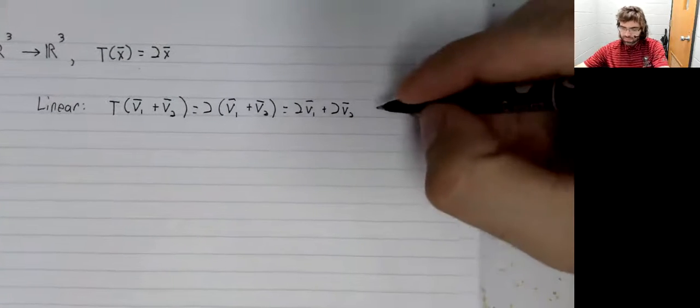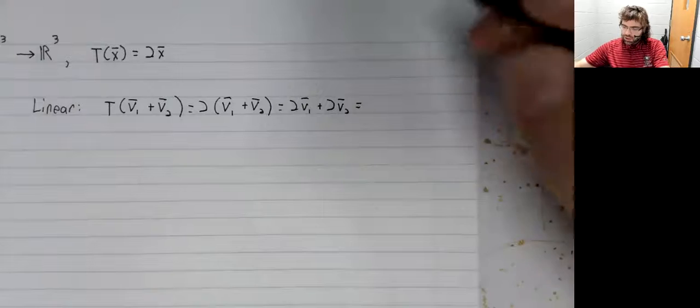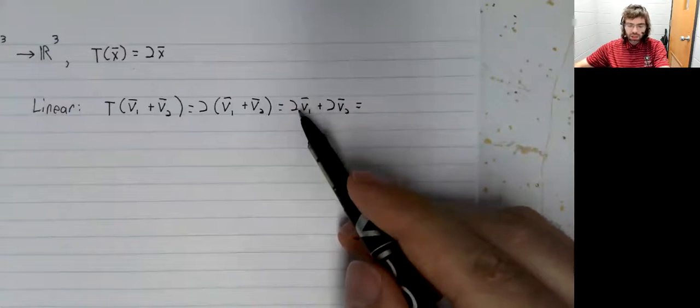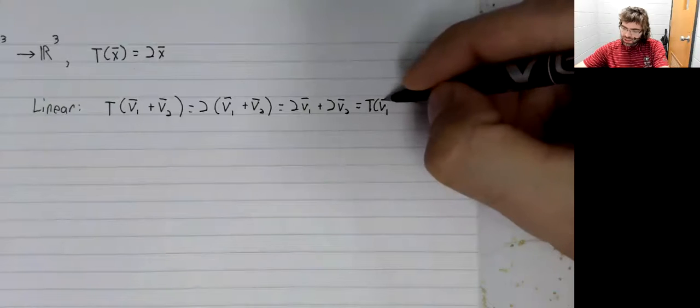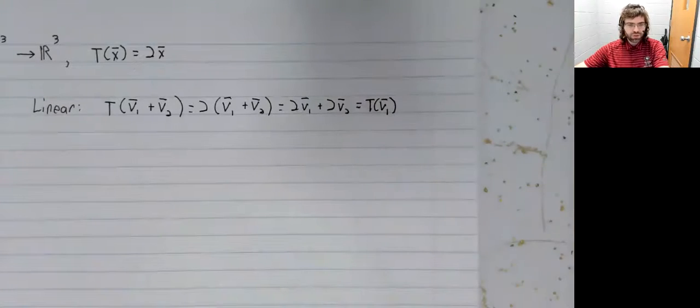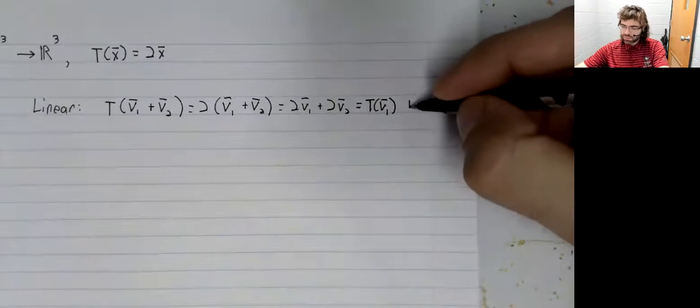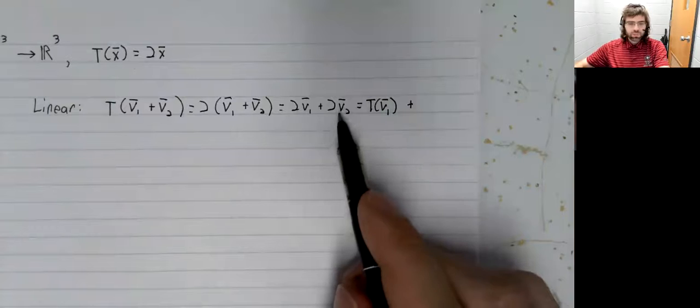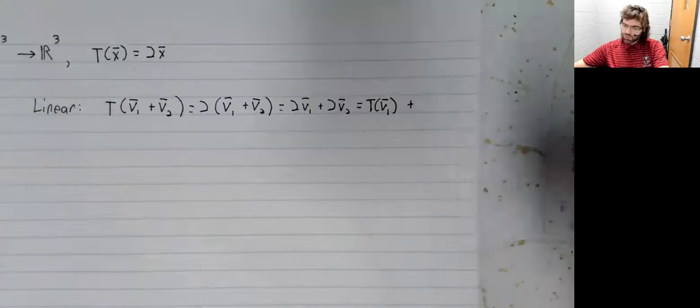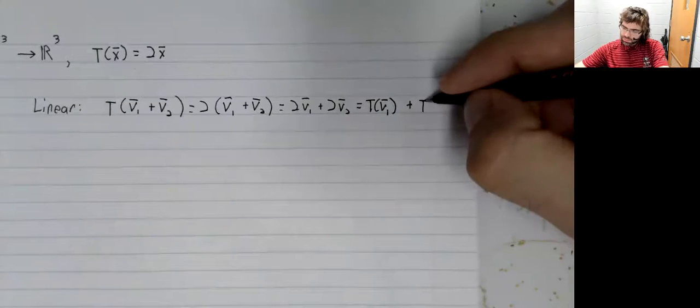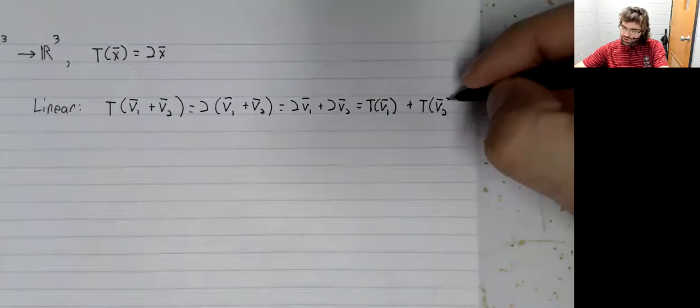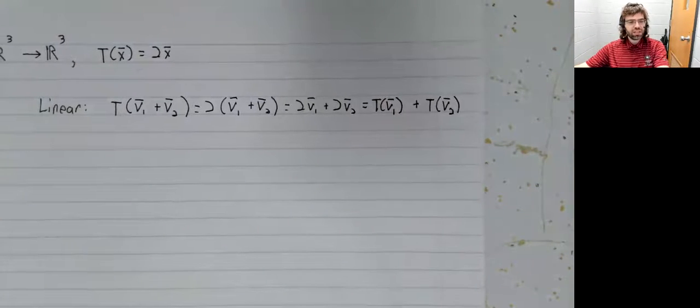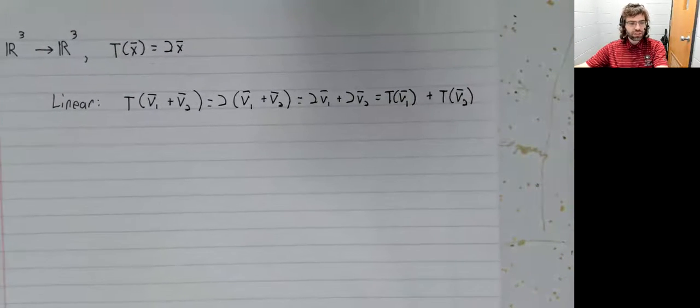Twice v1 is precisely T of v1, and twice v2 is T of v2.